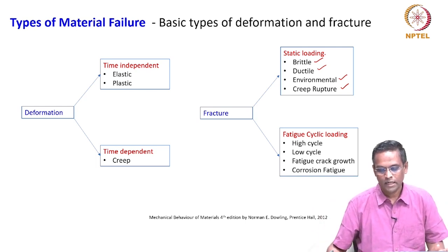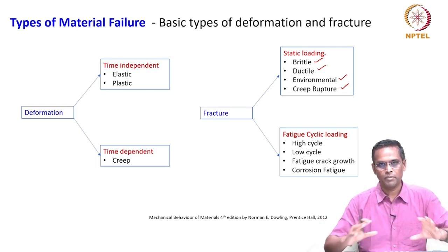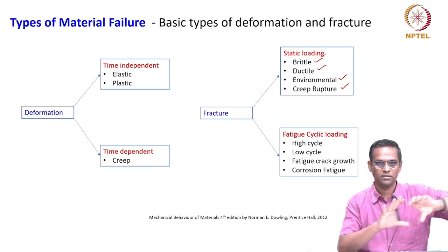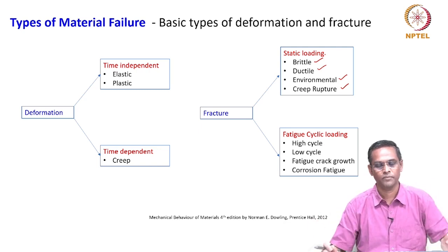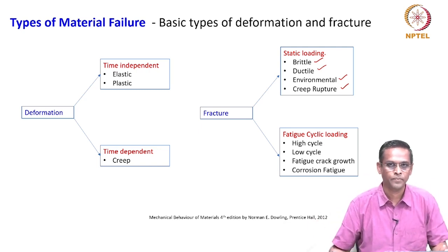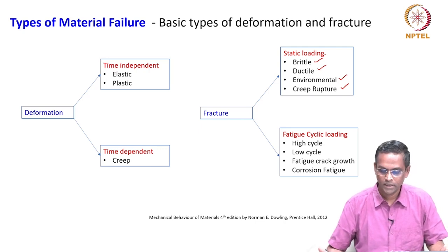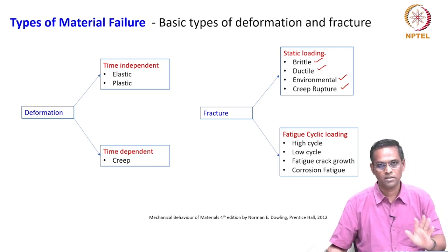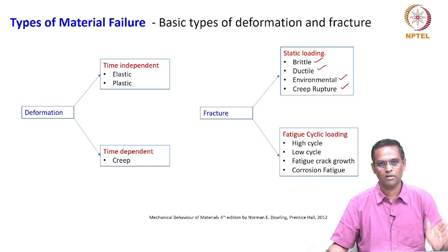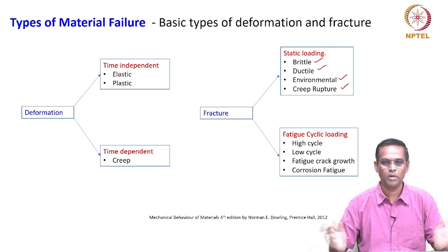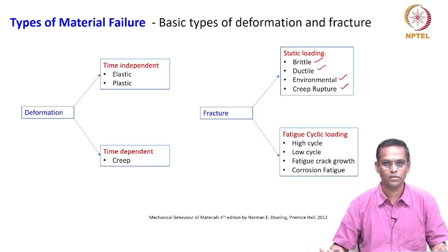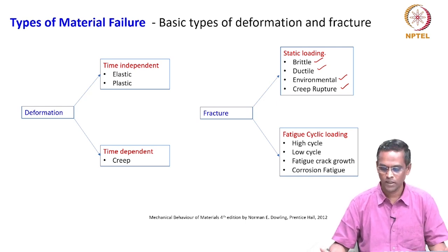A ductile fracture is like the pipe you have seen with large deformation. Environmental failure is corrosion — it could be oxidation, corrosion, hot corrosion, and so on.